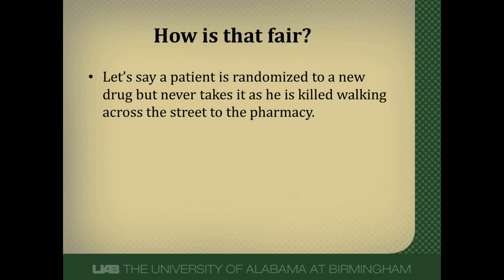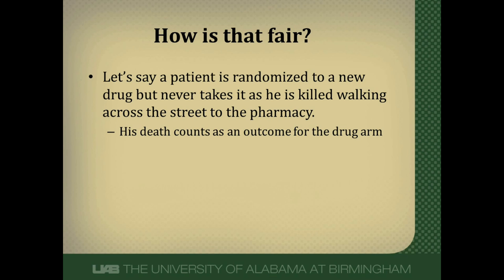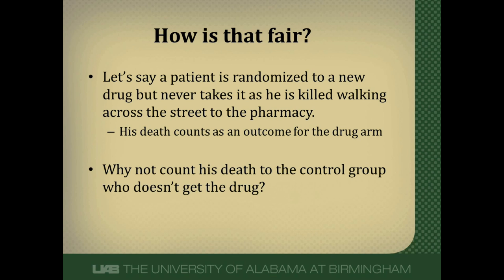Let's say a patient is randomized to the arm of a study where they get the new drug, but they never actually get the drug because they're killed walking across the street from the study center to the study pharmacy. That death will count against the drug arm. You might ask yourself, how is that fair? How can you count that death against a drug which the patient never got? Why not count their death to the control group, since the control group is the arm of the study which wasn't going to get the drug? That seems more fair, doesn't it?